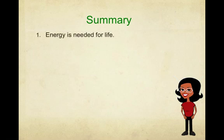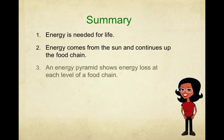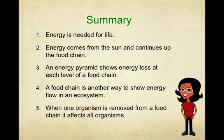So let's summarize what we've learned. Energy is needed for life. Energy comes from the sun and continues up the food chain. An energy pyramid shows energy loss at each level of a food chain. A food chain is just another way to show the energy flow in an ecosystem. And of course, when one organism is removed from a food chain, it affects all the other organisms. This is really probably one of the most important points here. So I hope you've enjoyed this video and thank you for watching.